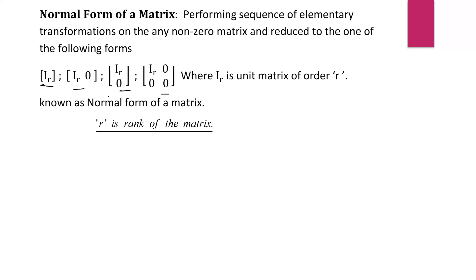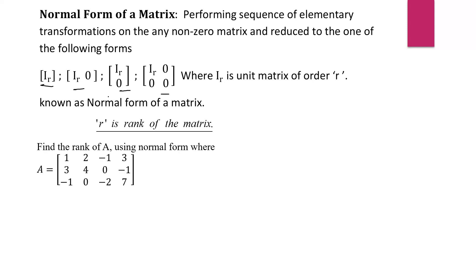Let us see the example of how we can find the rank of a matrix by normal form. We have the question: find the rank of A using normal form, where matrix A is given. In this problem, we reduce this rectangular matrix to the identity matrix. So we want 1 as the first element of the first row — and already 1 is present.